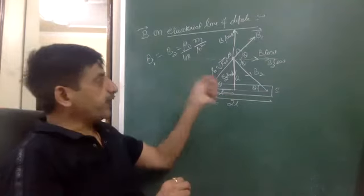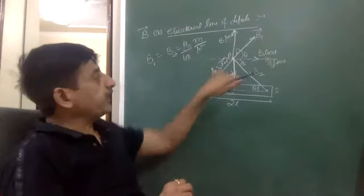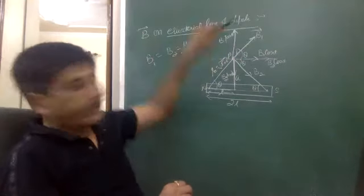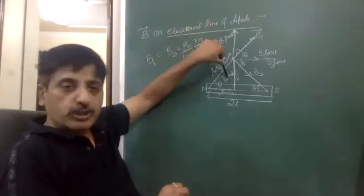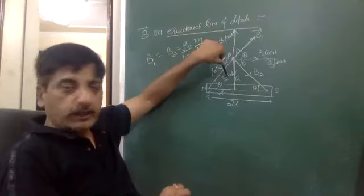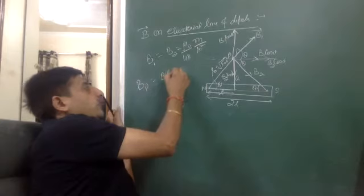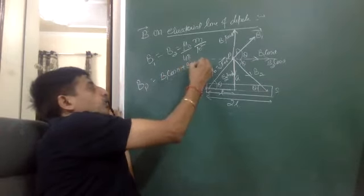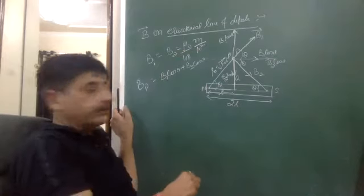This is the final formula. B1 and B2 are equal, and the two components are opposite. The total magnetic field at point P equals B1 cos theta plus B2 cos theta, which gives the full value at point P.